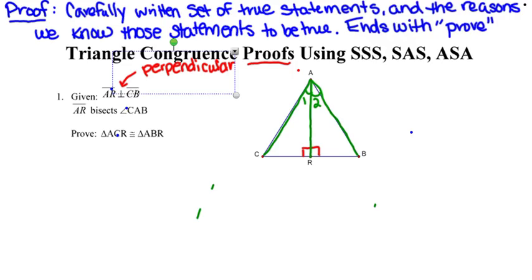Now I'll recall our methods of proving triangles congruent: side-side-side, side-angle-side, and angle-side-angle. At this point I only have two pairs of congruent parts. I'll ask myself: can I use the diagram to find some vertical angles? No. Can I use the diagram to find some shared sides? Yes — I can see in the picture that those triangles both share side AR.